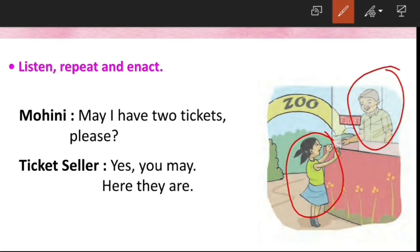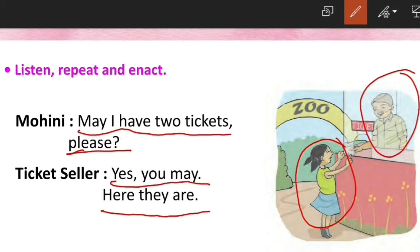Mohini asks the ticket seller: 'May I have 2 tickets please?' The ticket seller says: 'Yes, you may. Here they are.' Mohini asked the ticket seller for two tickets, and the ticket seller said yes you may.